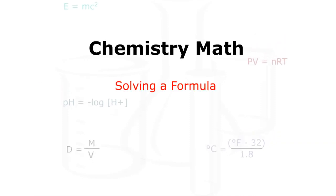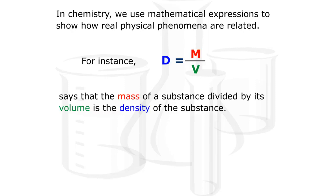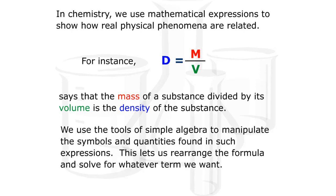Welcome to this learning object: Chemistry Math - Solving a Formula. In chemistry, we use mathematical expressions to show how real physical phenomena are related. For instance, D equals M divided by V says that the mass of a substance divided by its volume is the density of the substance.